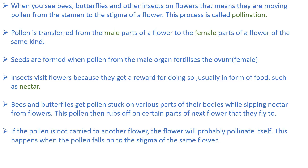When you see the bees, butterflies and other insects on the flowers, that means they are moving the pollen from the stamen to the stigma of a flower — that is called pollination. That means the process by which the pollen is transferred from the anther, that is the male part, to the stigma, which is the female part of the plant, that enables fertilization and seed formation. This process is called pollination.